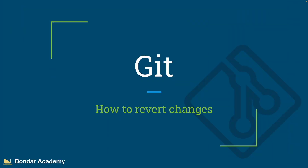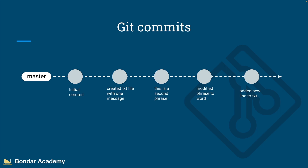Let's talk about how to revert changes in git. Here is our master branch with the list of commits performed in this class so far, and I would like to introduce a new definition in git called HEAD. HEAD in git is simply a pointer which points to the version of a commit. By default HEAD is always looking at the latest commit, but you can move it back and forth to switch between commits.